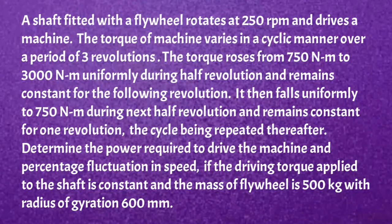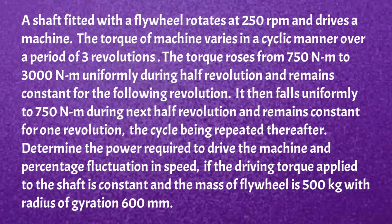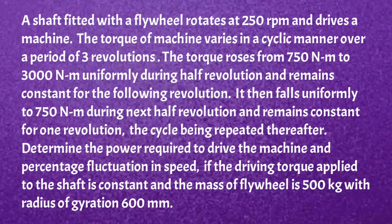A shaft fitted with flywheel rotates at 250 rpm and drives a machine. The torque of the machine varies in a cyclic manner over a period of 3 revolutions. The torque rises from 750 Nm to 3000 Nm uniformly during half a revolution and remains constant for the following revolution. It then falls uniformly to 750 Nm during the next half revolution and remains constant for one revolution, the cycle being repeated thereafter. Determine the power required to drive the machine and the percentage fluctuation in speed if the driving torque applied to the shaft is constant and the mass of flywheel is 500 kg with radius of gyration of 600 mm.